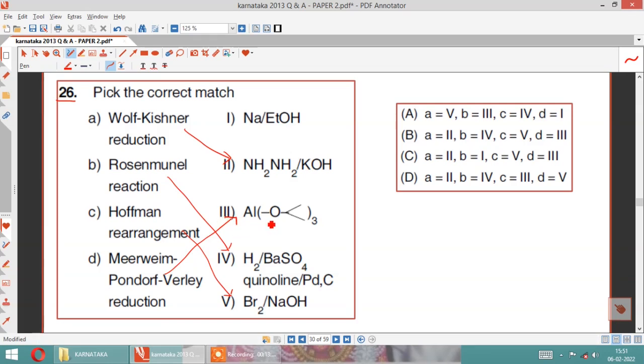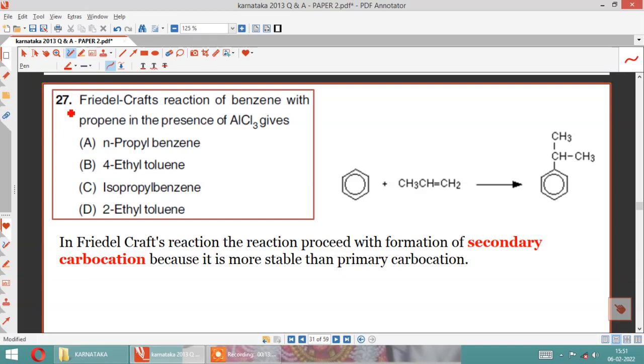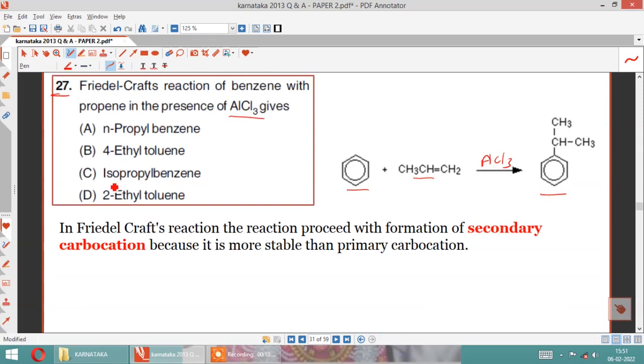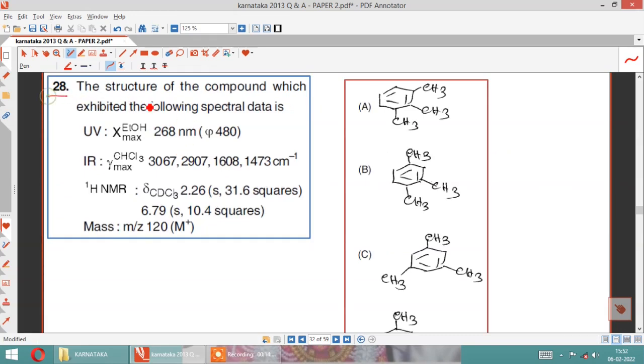Question 27: Friedel-Crafts reaction of benzene with propene in presence of AlCl3. Benzene and propene in presence of AlCl3 gives secondary carbocation, and the product is isopropyl benzene.